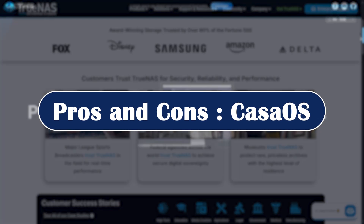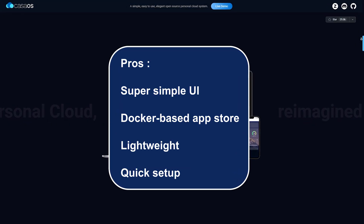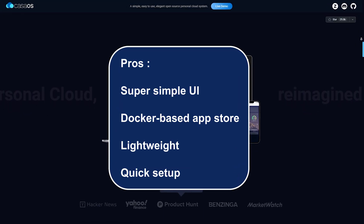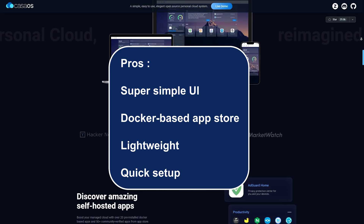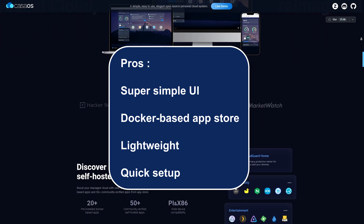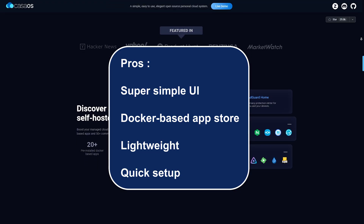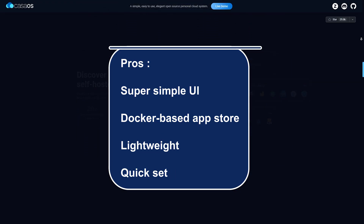Let's start with CasaOS pros. It has a super simple, beginner-friendly, and modern user interface. It features a Docker-based app store where you can easily install apps like Plex, Jellyfin, or Home Assistant. It's also lightweight, runs well even on budget hardware, and has a quick setup with a minimal learning curve.